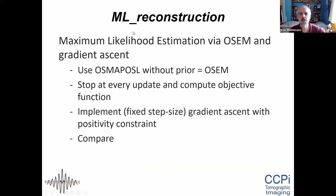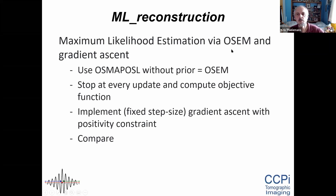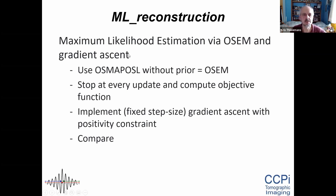The first notebook guides you through using OSEM, not just by calling it like we did last week, but also by stopping it — in this case not for filtering but to compute the objective function. You could put other things in there as illustrated earlier. Then it compares that with simple gradient ascent with a fixed step size, which might get you into trouble if you choose it too large, or be too slow if too small. The notebook tries to make you aware of these things and see how you would implement it.